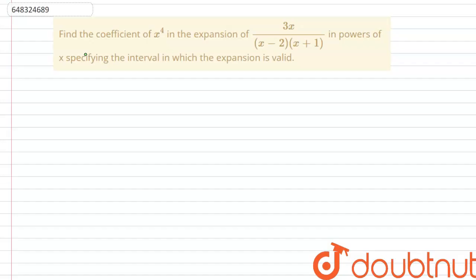We have the question: find the coefficient of x to the power 4 in the expansion of 3x divided by (x minus 2) into (x plus 1) in powers of x, specifying the interval in which the expansion is valid.